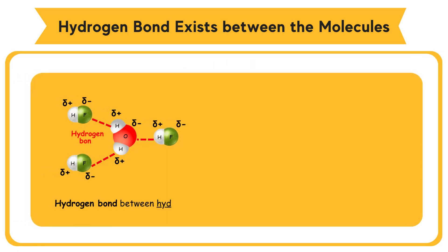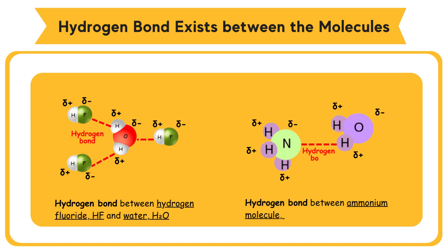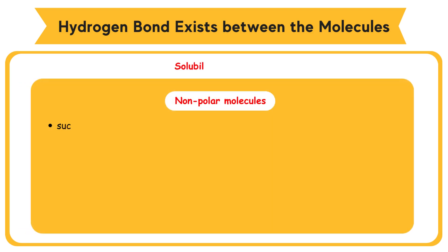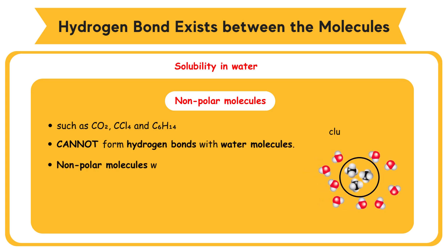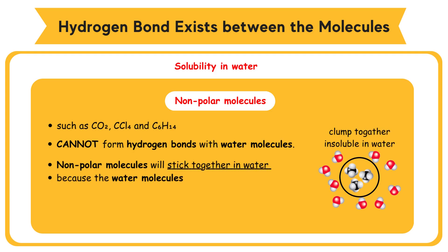Hydrogen bond forms between hydrogen fluoride HF and water H2O, and also between ammonia NH3 and water H2O. Nonpolar covalent molecules such as carbon dioxide CO2, tetrachloromethane CCl4, and hexane C6H14 are insoluble in water. Water molecules are polar molecules that form hydrogen bonds with one another. Polar molecules dissolve in water because they form hydrogen bonds with water molecules. Nonpolar covalent molecules cannot form hydrogen bonds with water molecules; nonpolar molecules will stick together in water because water molecules form hydrogen bonds with water. They are therefore insoluble in water.